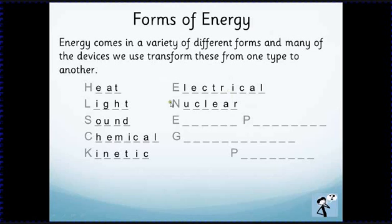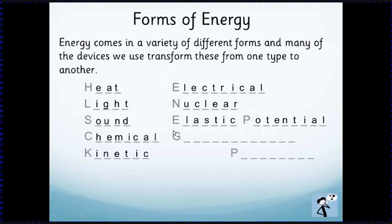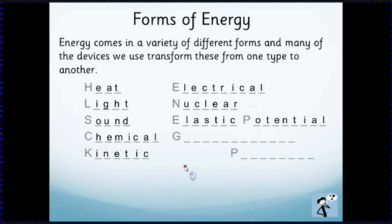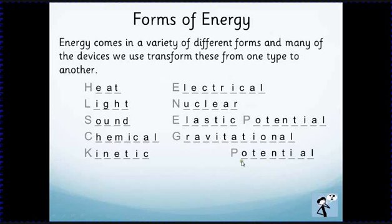Then we've got two sorts of potential or stored energy. One is elastic potential energy — this is anything which is stretched or squashed that will return to its original shape, like an elastic band. Then we've got gravitational potential energy, which is the energy of anything that's been lifted up. If you pick a rock up and put it on a shelf, it takes energy to do that.